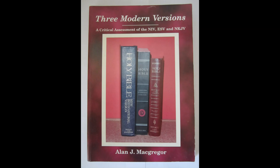One: the NIV follows the Westcott and Hort-influenced modern critical Greek text. Two: as with other modern versions, it uses the paragraph method. Whatever the perceived merits of distinguishing poetry and prose, it disguises textual omissions. Three: it uses dynamic equivalents. Four: this leads to "wholesale rejection of words and even phrases," in addition to omissions due to textual issues.